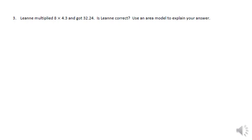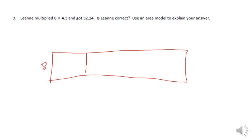On question three, it says Leon multiplied eight times four and three tenths and got 32 and 24. Is Leon correct? Use an area model to explain your answer. So we're going to use an area model. And on the side of my area model, I'm going to have eight.